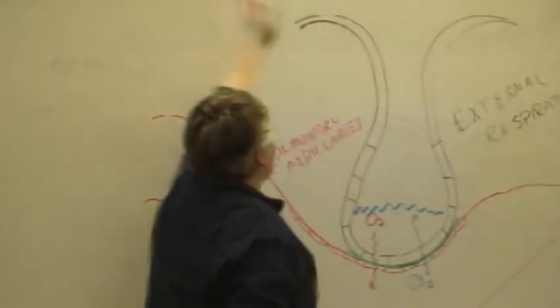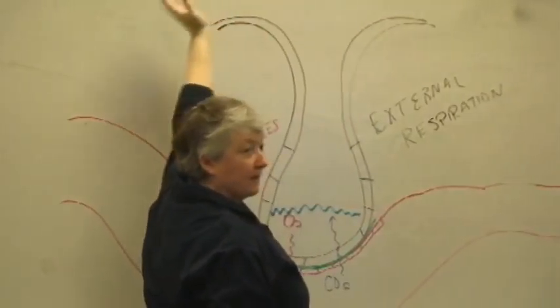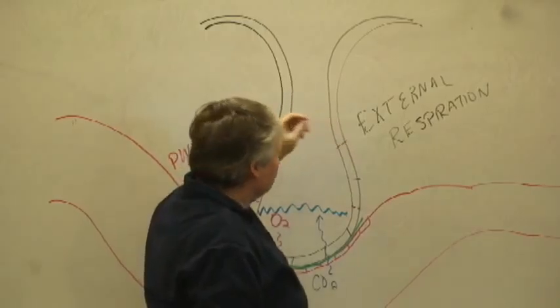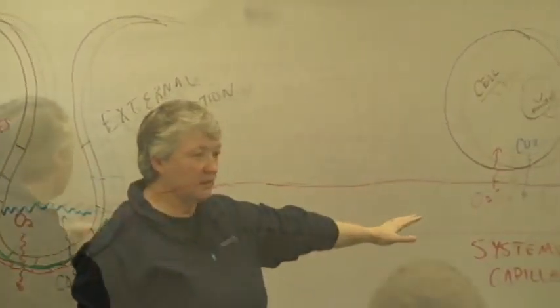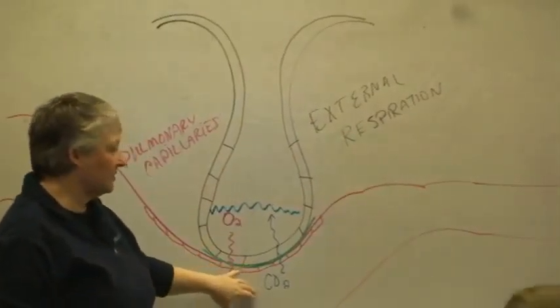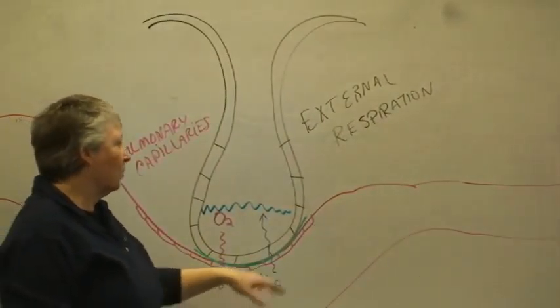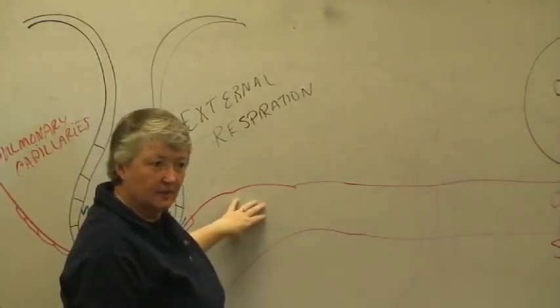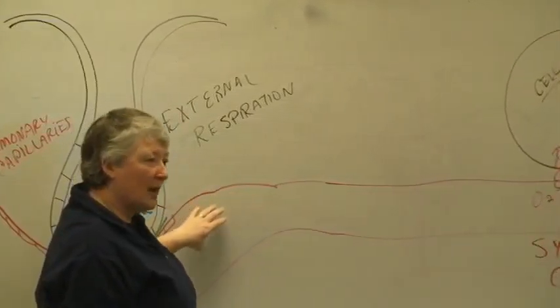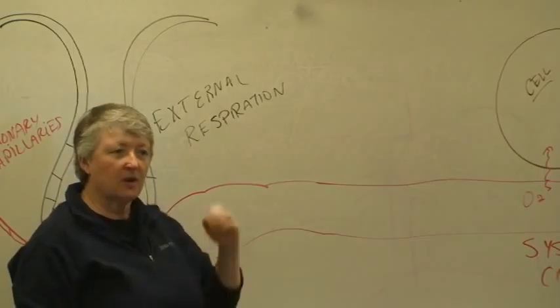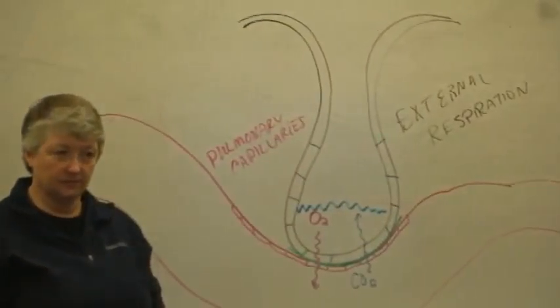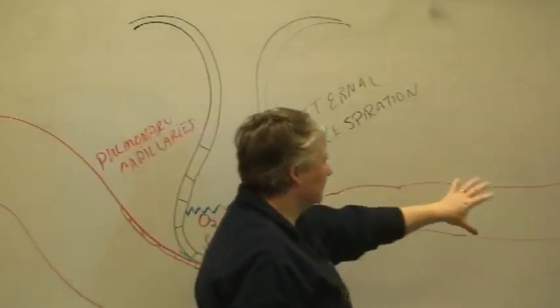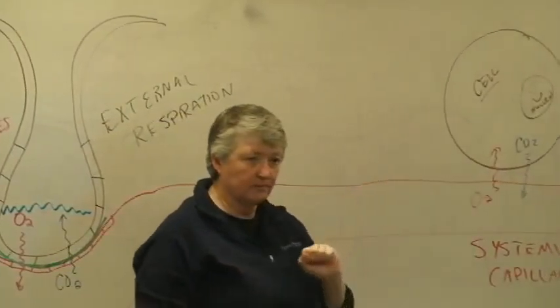So you have to get air in and out of the alveoli - that's the pulmonary ventilation. Then you've got external respiration and internal respiration. But in between these two things, I just said oxygen and carbon dioxide are not very water soluble. Well, most of your blood is water, right? So you have to have a way to transport the gases in the bloodstream. Oxygen and carbon dioxide don't dissolve well in the water, so to connect these two things, you have to have the gas transport.